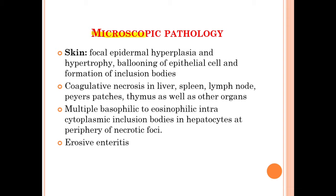Under the microscopic pathology in mice infected with infectious ectromelia, under the skin you may see focal epidermal hyperplasia, hypertrophy, ballooning of epithelial cells, and formation of inclusion bodies. You can also see coagulative necrosis in the liver, spleen, lymph nodes, Peyer's patches, thymus, and other organs. There will be multiple basophilic to eosinophilic intracytoplasmic inclusion bodies in the hepatocytes at the periphery of the necrotic foci. Erosive enteritis is also seen as a microscopic lesion.